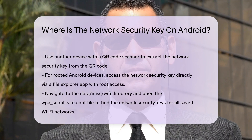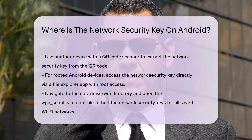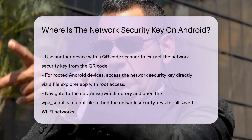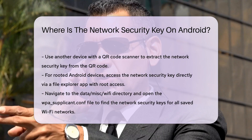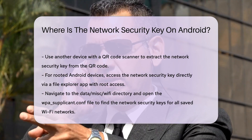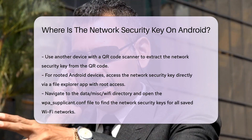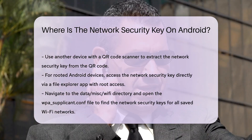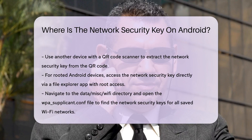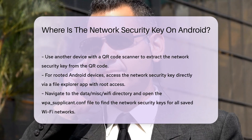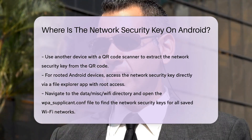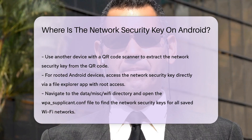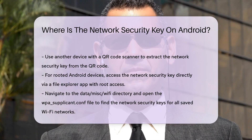Alternatively, if your Android device is rooted, you can access the network security key directly. Rooting your device gives you super user access, allowing you to view system files. Use a file explorer app with root access and navigate to the data's MISC Wi-Fi directory.